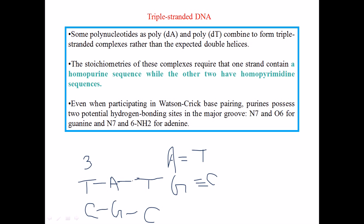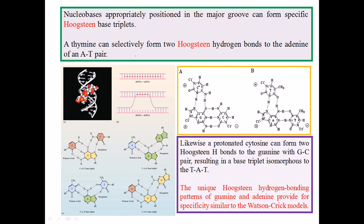The ability of a purine residue to bond with two pyrimidine residues gives the DNA the degree of freedom to make triple-stranded structures. Looking at the structure, we have one adenine in the middle and two thymines. The normal Watson-Crick bonding regions are used, but additionally, another hydrogen found at the N7 portion of the purine adenine allows a second bond, making the triplex structure stable.